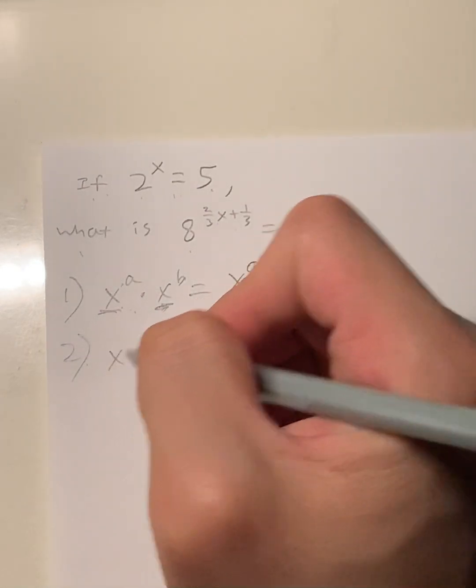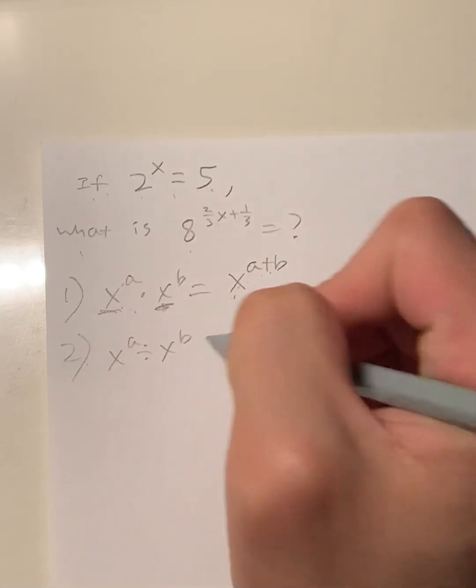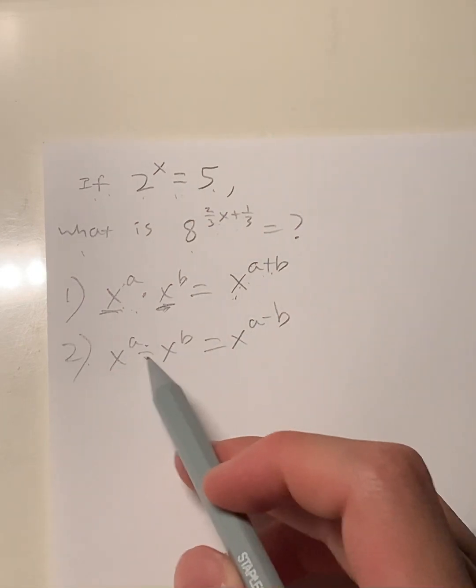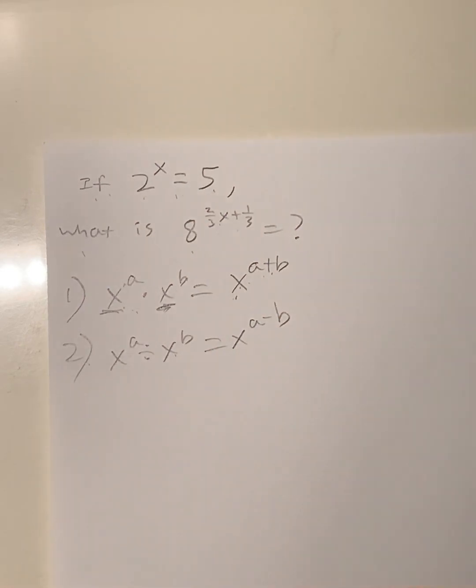Rule number two: x^a divided by x^b. What do you think that's equal to? That's going to be equal to x^(a-b). When you're dividing exponents with the same base, you subtract their exponents.